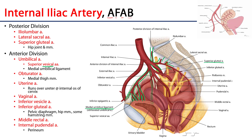Another branch especially allied with the umbilical artery is the obturator artery. They travel in roughly the same direction, except the obturator artery is a little more inferior and exits the pelvis through the obturator canal, heading towards the medial portion of the thigh where it is a major source of blood for the medial compartment, serving those adductors of the thigh.